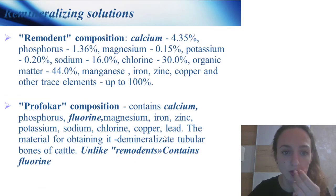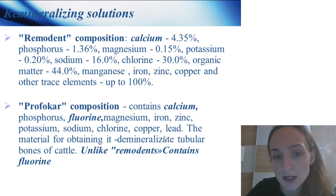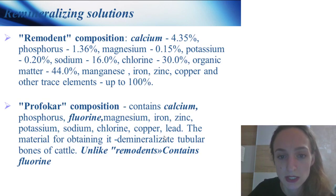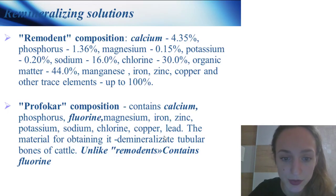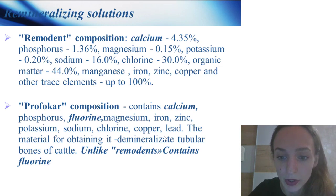A remineralizing solution is Remedent. Its composition includes calcium, phosphorus, magnesium, and others. Profocar composition also contains calcium, phosphorus, fluorine, magnesium, iron, zinc, potassium, sodium, chlorine, copper, and lead — the material is obtained from demineralized tubular bones of cattle.